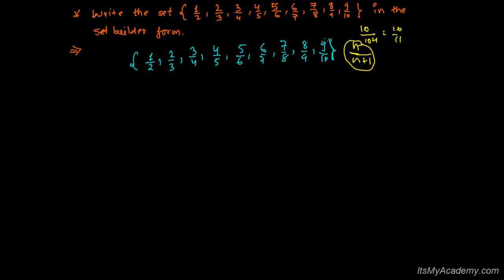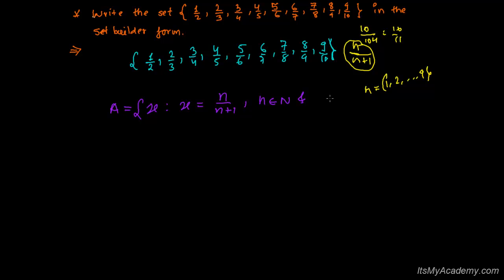I just have to mention first that n goes from 1 to 9, because when you put 9 here you will get 10 automatically. Writing this into the set-builder form: set A whose members are x, such that x equals n over n plus 1, and n belongs to the natural numbers and n is greater than or equal to 1 but less than or equal to 9.